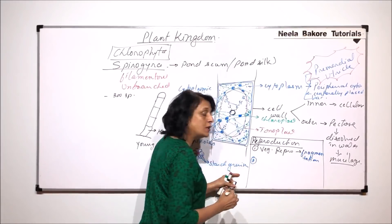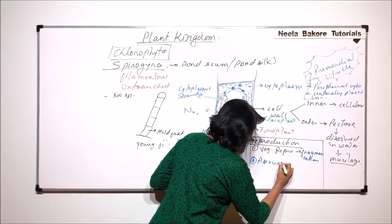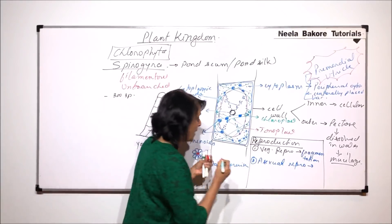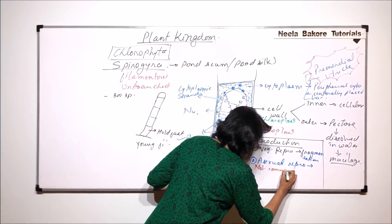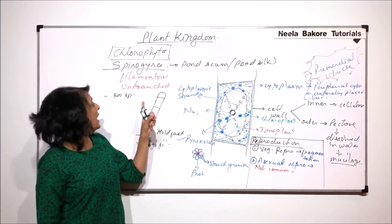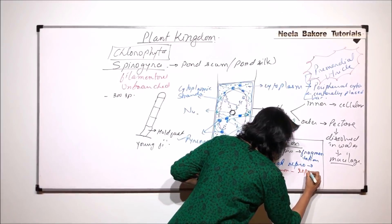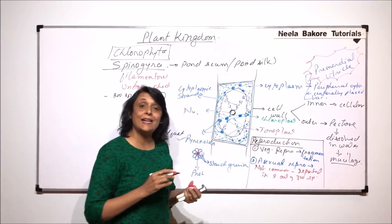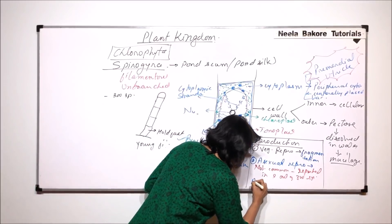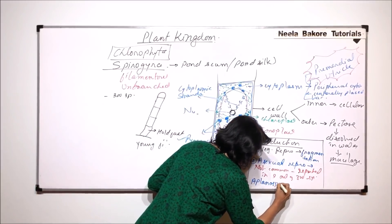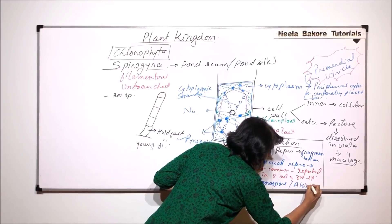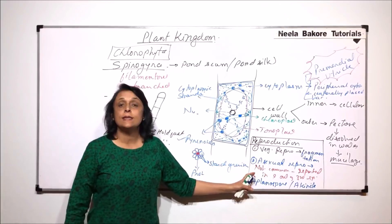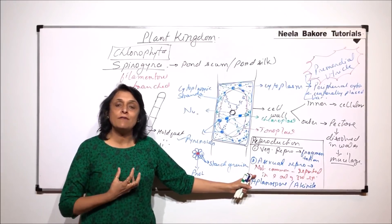The next method we normally talk of is asexual reproduction. Asexual reproduction is not common in Spirogyra. It has been reported only in 9 out of 300 species. That too, it takes place by aplanospore formation or akinete formation. That means there are some thick-walled structures formed as asexual reproduction and once that unfavorable condition is gone, those structures would give rise to the new filament.